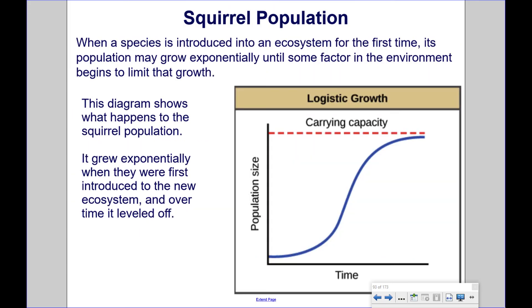When a species is introduced into an ecosystem for the first time, its population may grow exponentially until some factor in the environment begins to limit that growth. This diagram shows what happens to the squirrel population: it grew exponentially when first introduced to the new ecosystem, and over time, it leveled off.